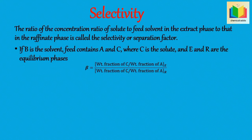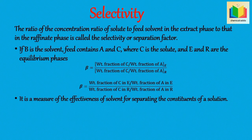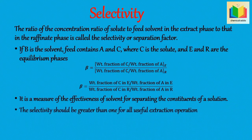...the ratio of weight fraction of solute C to weight fraction of feed solvent A in the raffinate phase. It can also be written as beta = (XC in extract / XA in extract) / (XC in raffinate / XA in raffinate). Hence, selectivity is a measure of the effectiveness of the solvent for separating the constituents of a solution. For better separation by extraction, the selectivity should be greater than one.